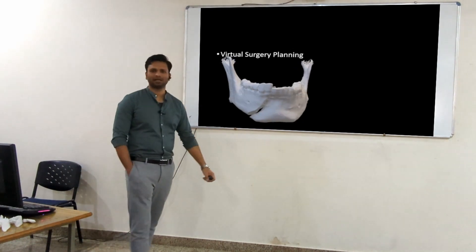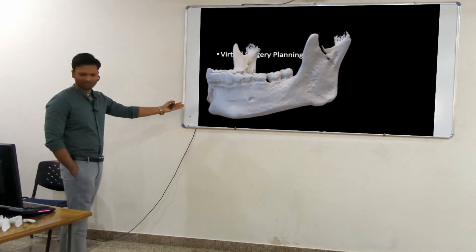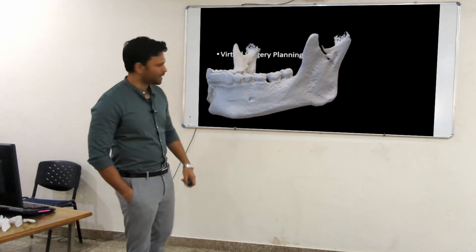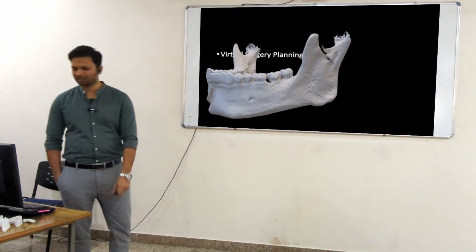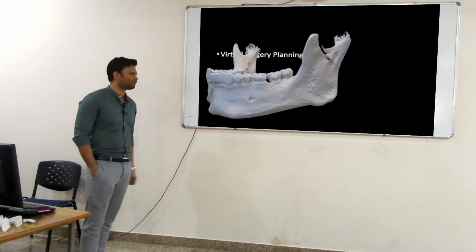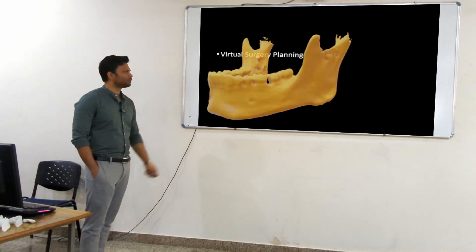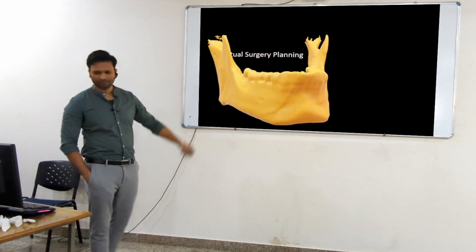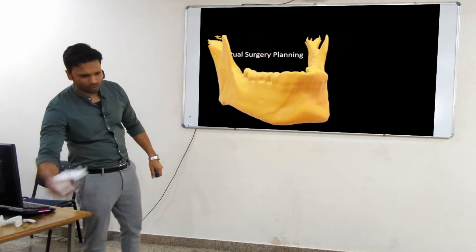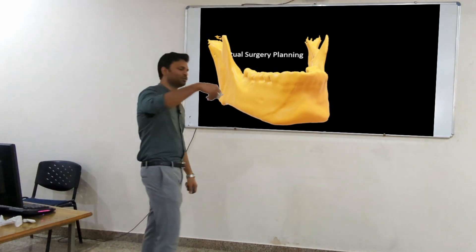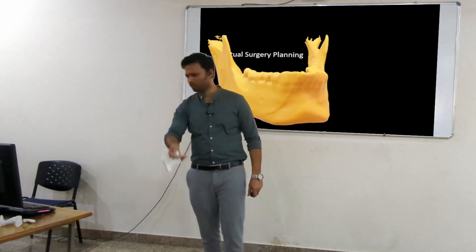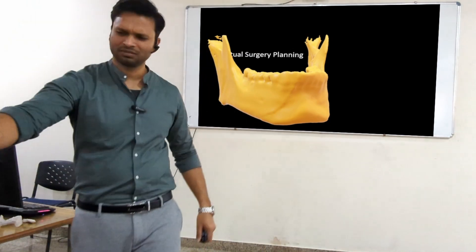What do you see in this? Parasymphyseal fracture and subcondylar fracture. So what we did was I extracted the 3D model using the DICOM files, performed mock surgery, reduced the subcondylar fracture, reduced the parasymphyseal fracture, and gave the model to my PGs to pre-bend the plates and practice plating.